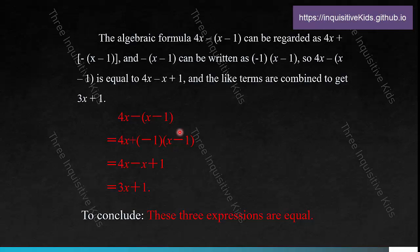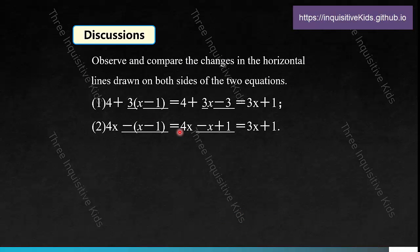We can conclude that these three expressions are equal. For discussion, observe and compare the changes in the horizontal lines on both sides of these two equations. Equation 1: 4 plus 3 times (x minus 1) equals 4 plus 3x minus 3, which equals 3x plus 1. Equation 2: 4x minus the difference of x and 1 equals 4x minus x plus 1, which equals 3x plus 1.